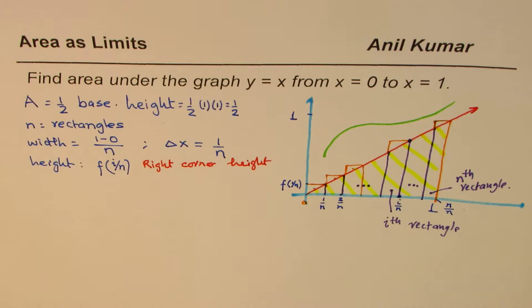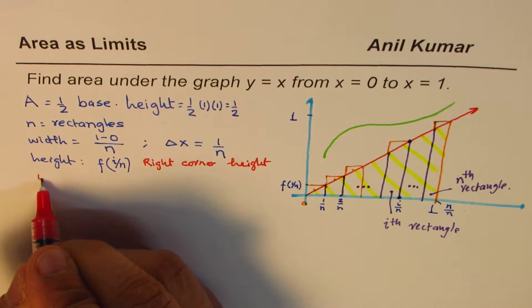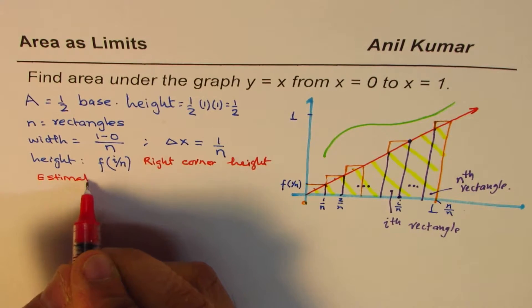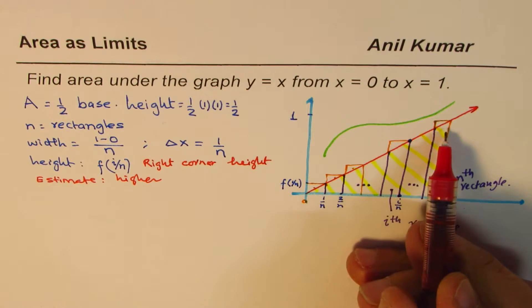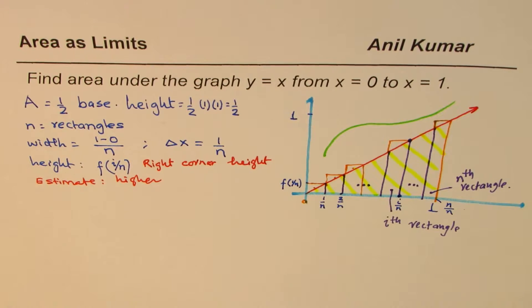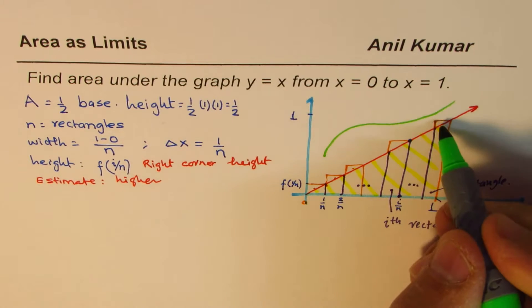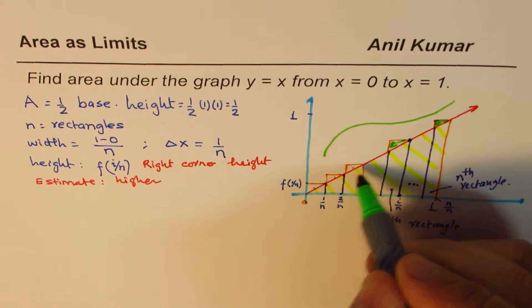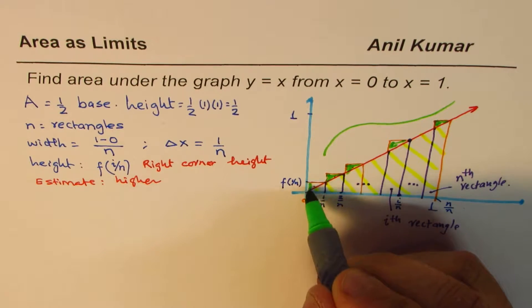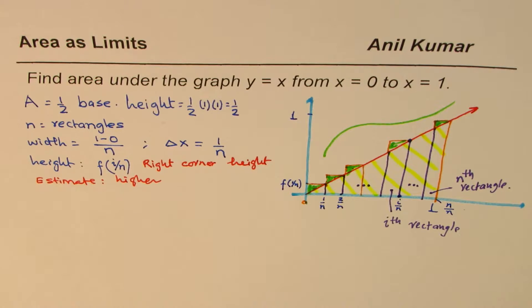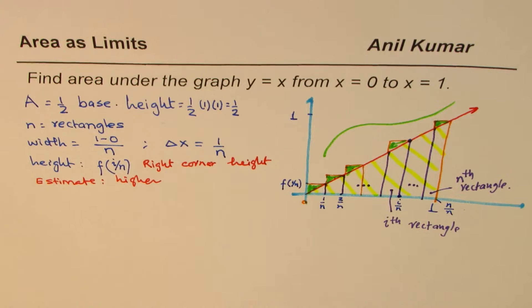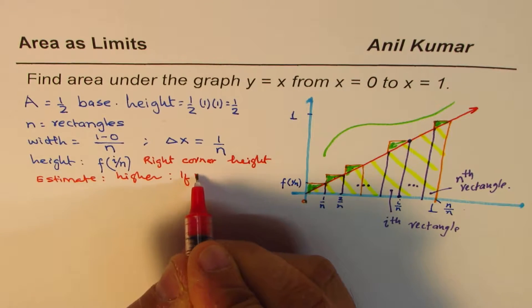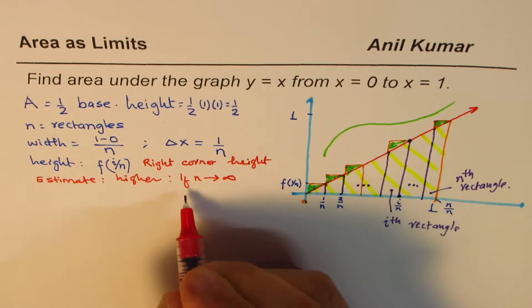Obviously my rectangles cover more area than the area under the curve, so I'm calling this a higher estimate — there's extra area added beyond the curve. But if we have a large number of rectangles, the estimate becomes fairly accurate. If n is approaching infinity, the accuracy improves.